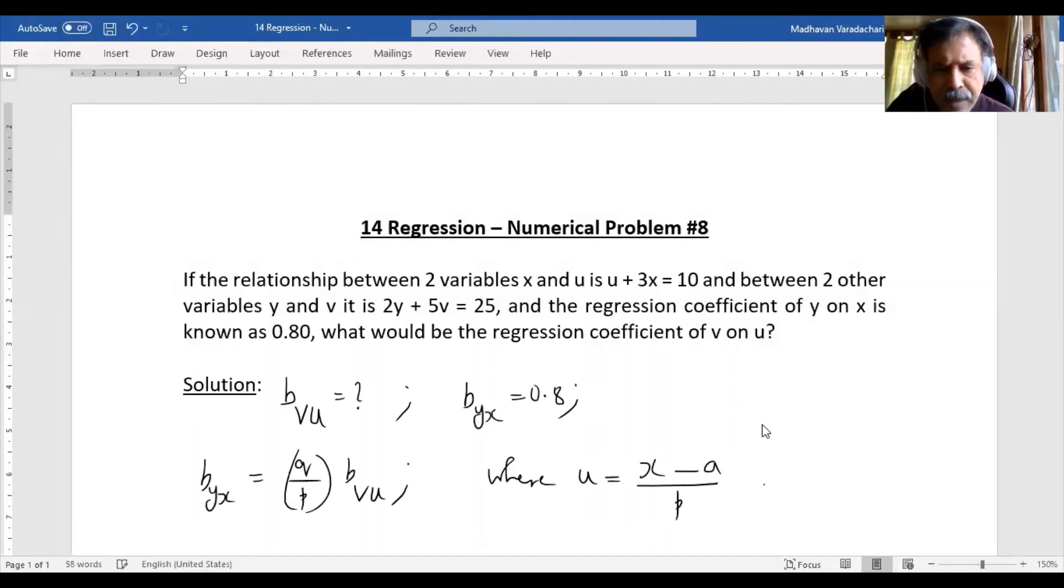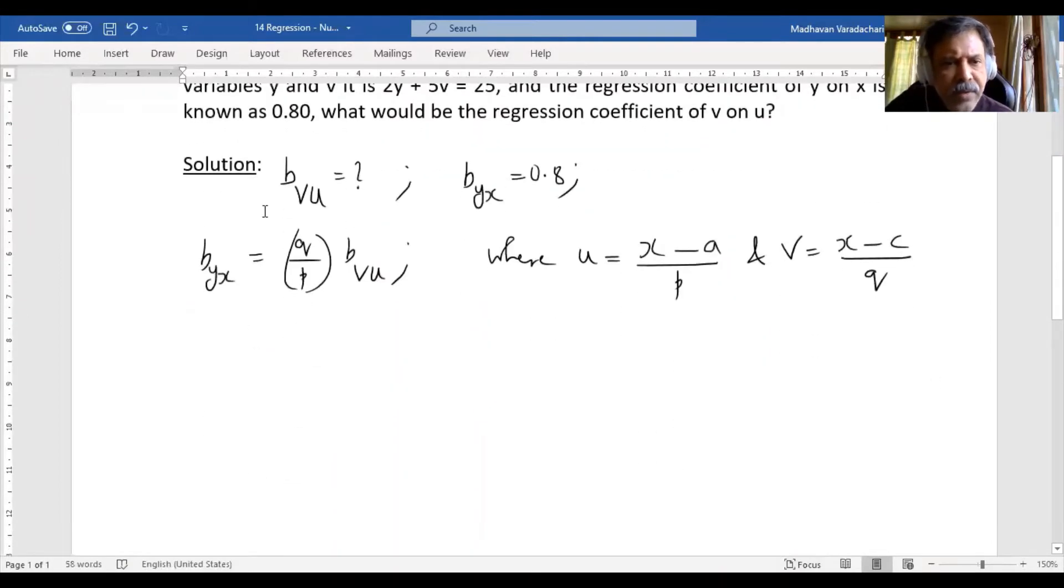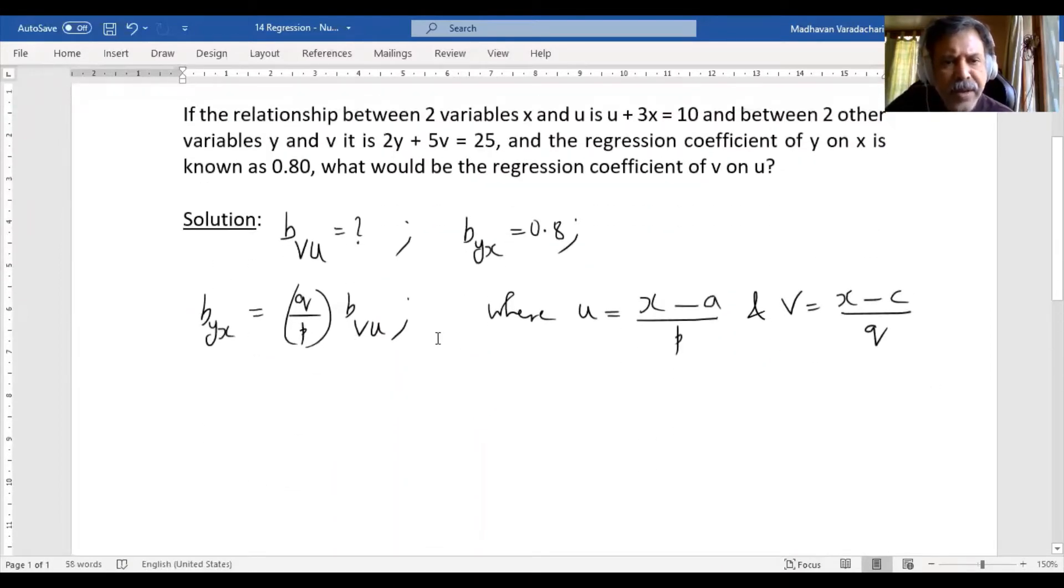And v is equal to y minus c divided by q. So by bringing the equation u plus 3x to this form and bringing the 2y plus 5v equation to this form, we should be able to find out what is p and q, then that can be substituted to find b_vu. First of all, given u plus 3x equal to 10.